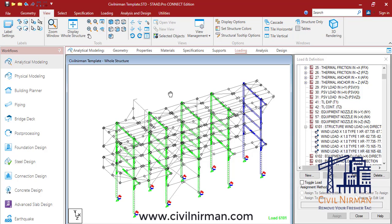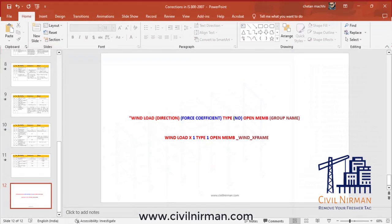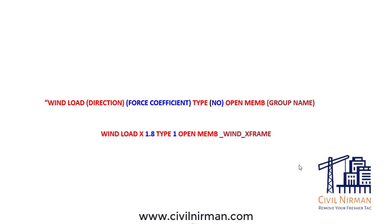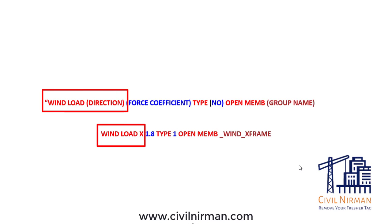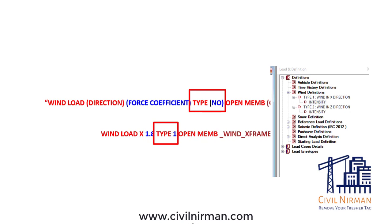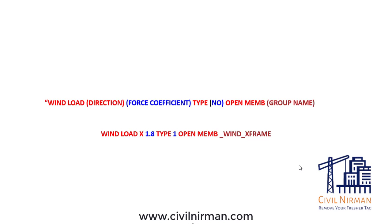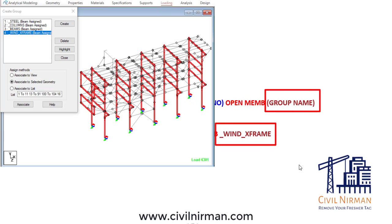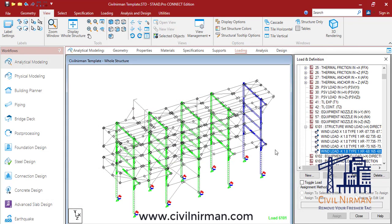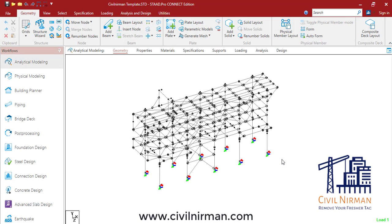Now here is the quick hack — let's understand how you can save your time and implement the wind load with the shortest method using the STAAD editor. What you have to do is specify your wind load direction (X), implement the force coefficient based on your calculation, write the wind definition, then write 'open member' and specify your group name. Keep in mind that this feature is available for the STAAD editor only.